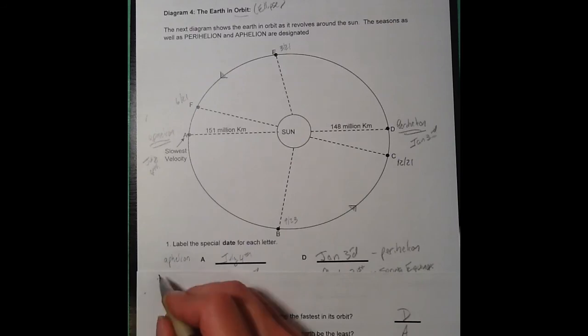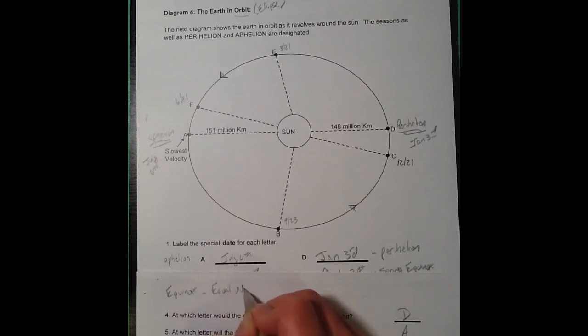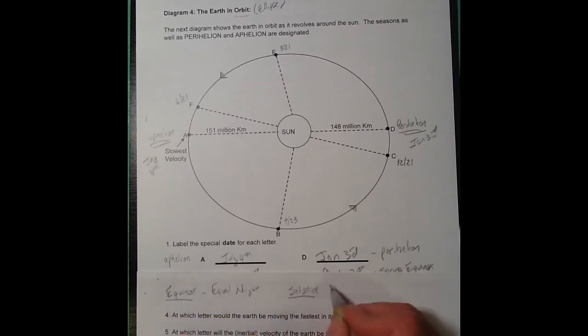Now, you should know that equinox translates to equal night. You may have asked, what does the word solstice mean? Well, one description, or one translation of the word solstice, sol means sun, and you can refer to the solstice as the sun's stop.